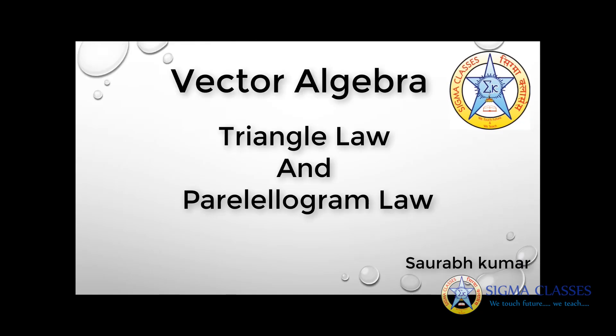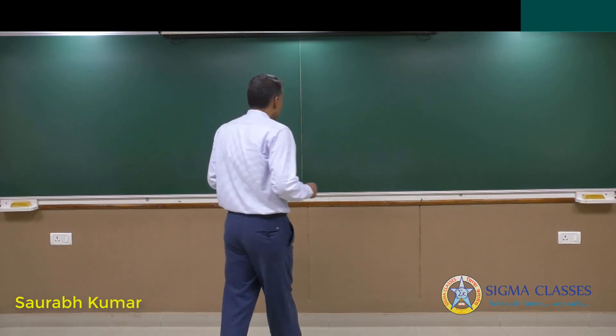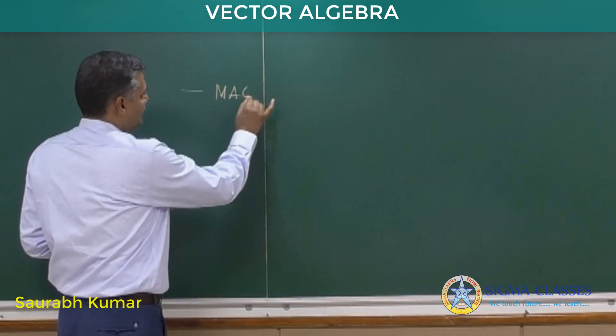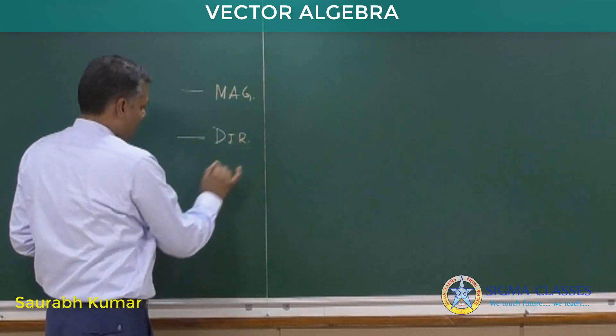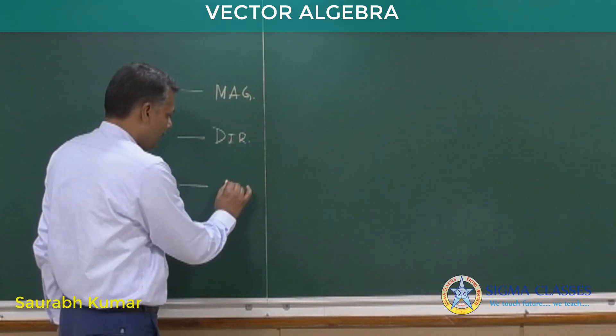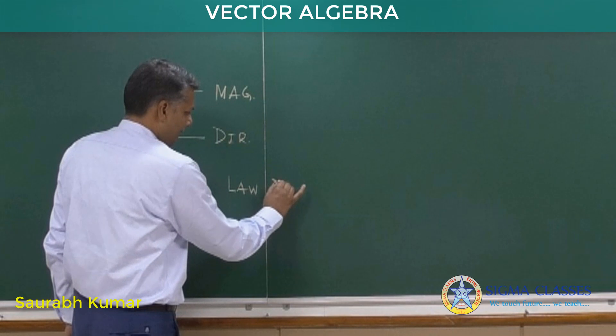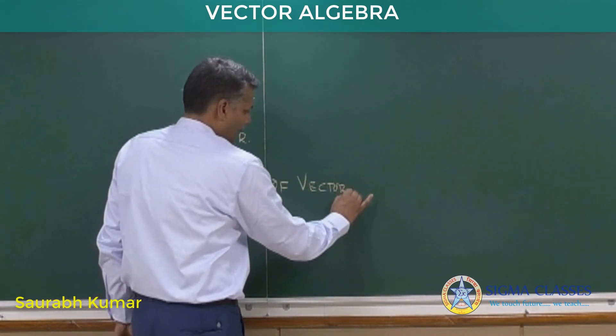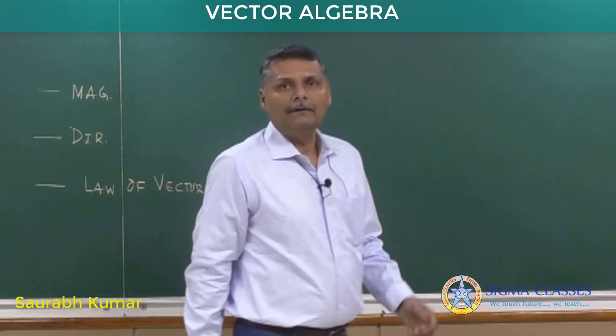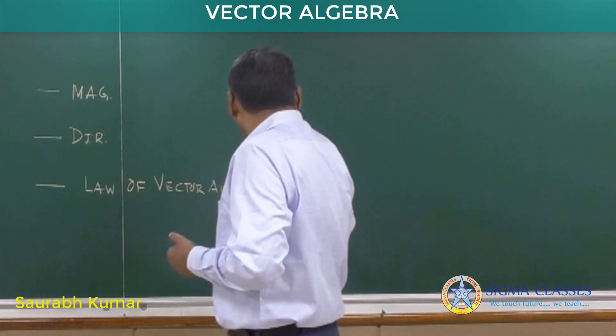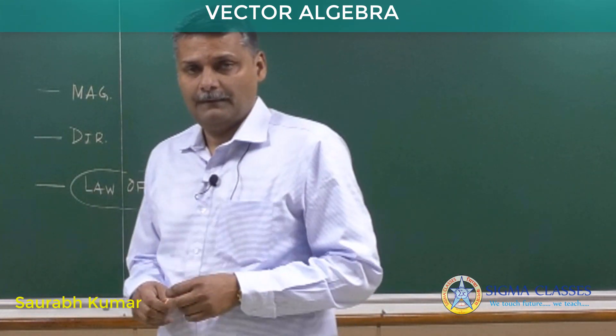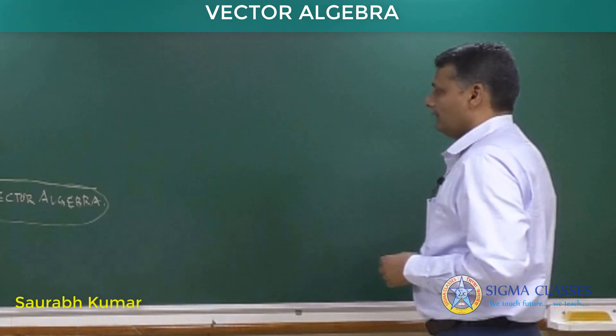In the last video, I discussed how you define a vector. The definition included: first, vector has magnitude; second, vector has direction; and there was a third point - vector should obey the law of vector algebra. So in today's video, I will discuss about the law of vector algebra. These laws are exclusive to vectors.